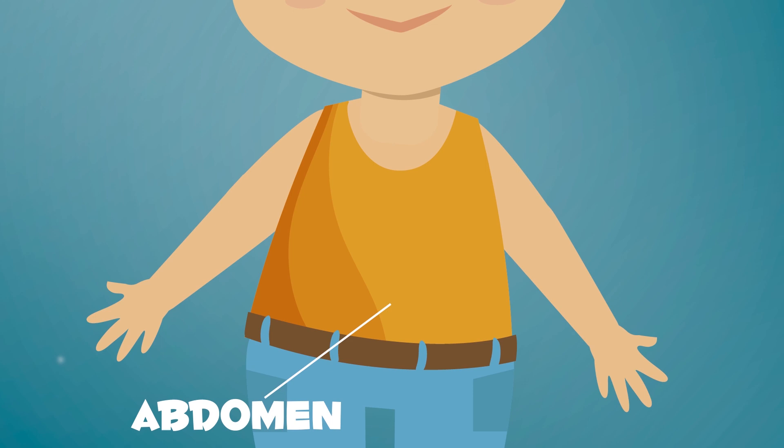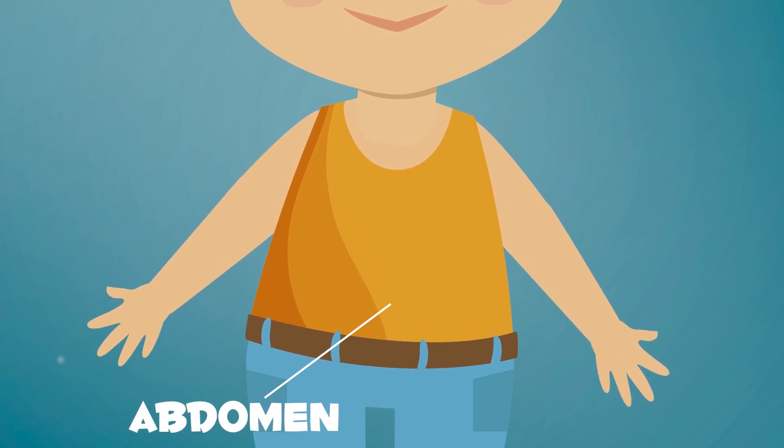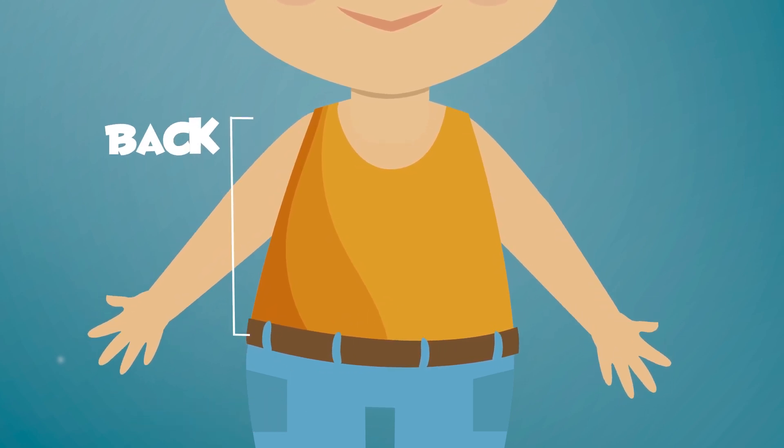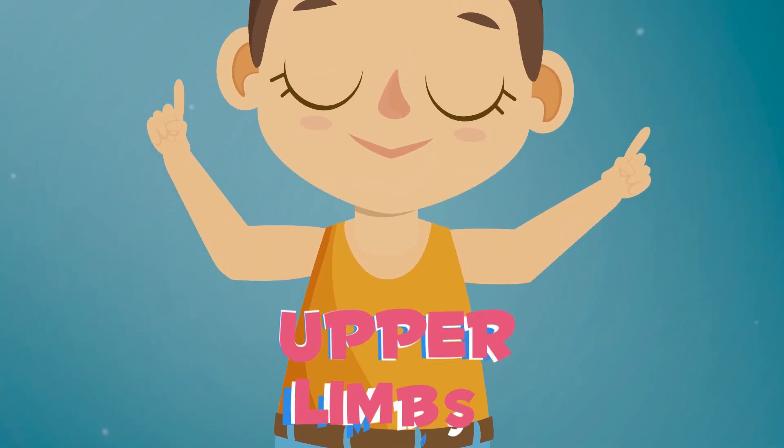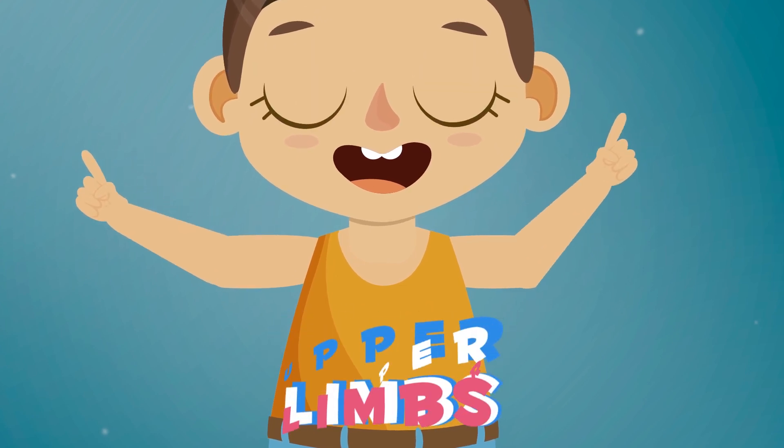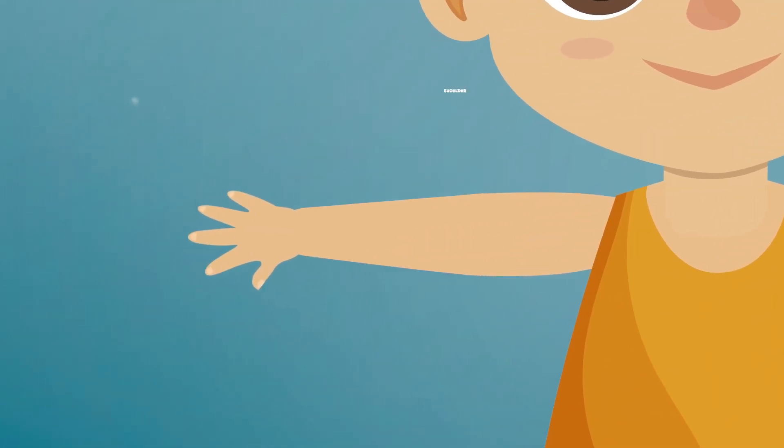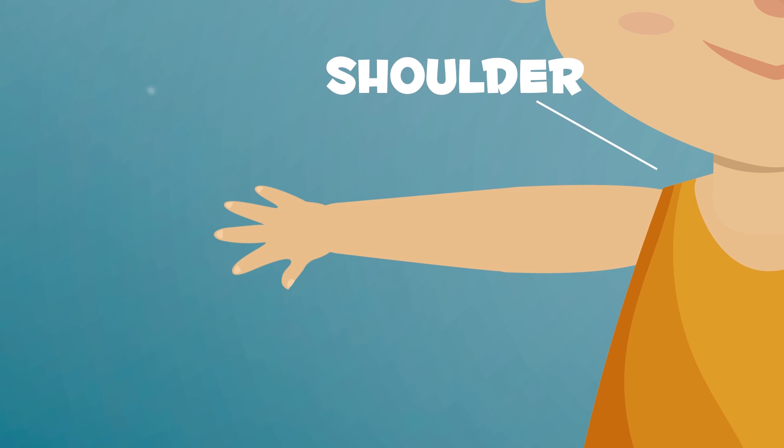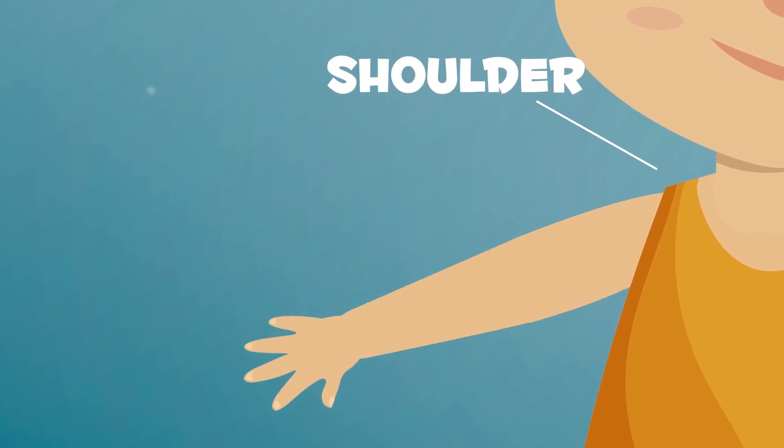Your abdomen is under your chest. In your abdomen, you can find your belly button. Your back is behind your chest and abdomen. Your shoulder is a joint that connects your trunk to your arm. Your joints allow you to move the parts of your body.